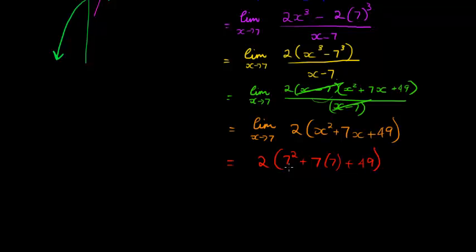So I get 7 squared plus 7 times 7 plus 49. That's interesting, it's 7 squared plus 7 squared plus 7 squared. So what do we get? 7 squared plus 7 squared. This is 49, 49, 49. That gives me 147. Times 2, that gives me 394.